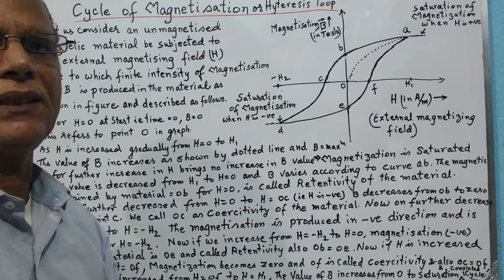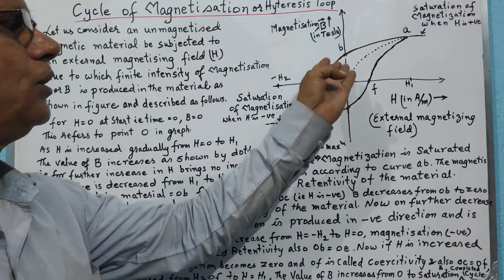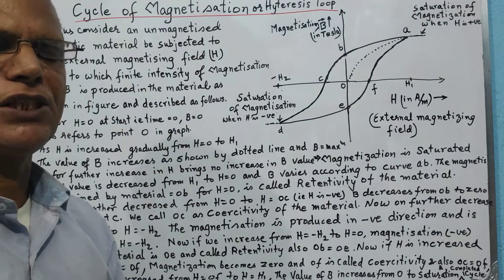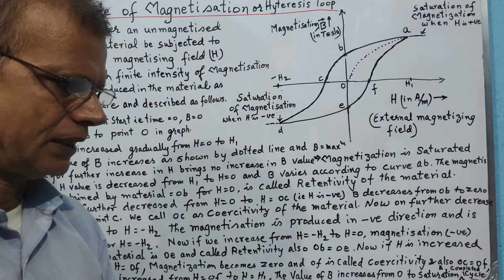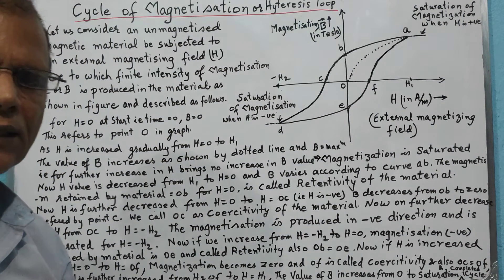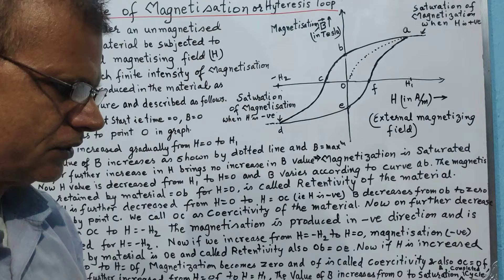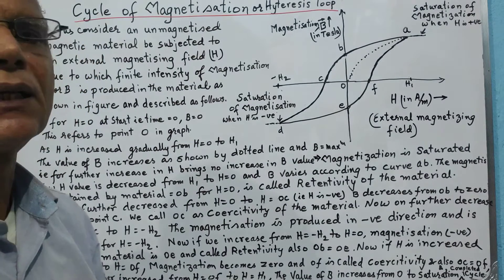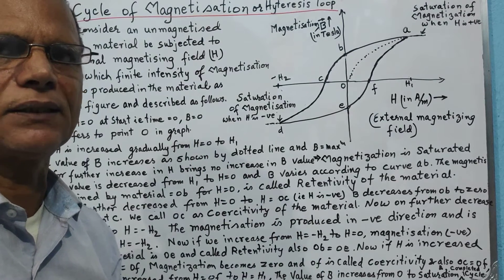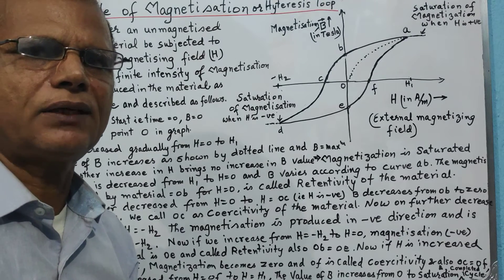We shall learn more about the applications of the cycle of magnetization in many fields — especially in transformers, where we select materials with minimum loop area so that energy loss is minimized. We will discuss further applications in the coming chapters when we encounter topics where this concept applies. That's all for today — thank you and have a nice day.